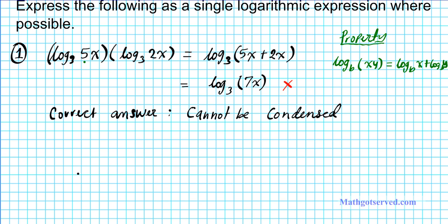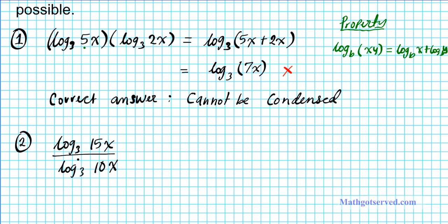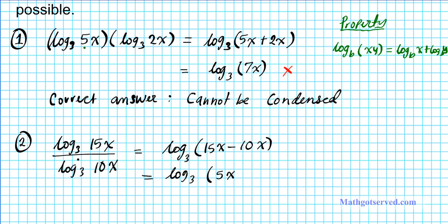Let's take a look at another common mistake. Problem number two: what if you have log base 3 of 15x divided by log base 3 of 10x? Some might think, since this is a quotient of two logarithmic expressions, I can write this as log base 3 of 15x minus 10x, which simplifies to log base 3 of 15 minus 10x. Of course, this is wrong.